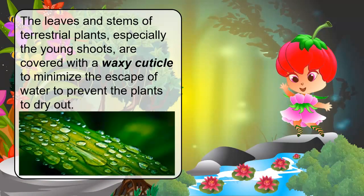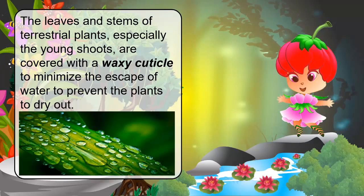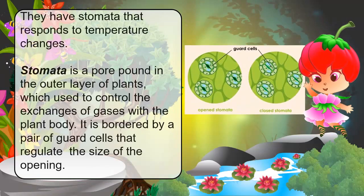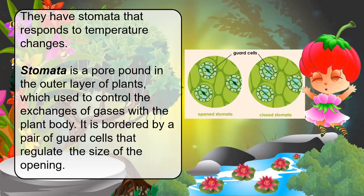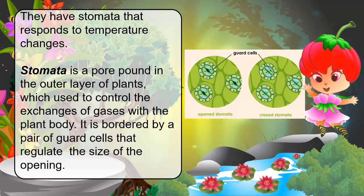These are the adaptations of terrestrial plants. The leaves and stems of terrestrial plants, especially the young shoots, are covered with a waxy cuticle to minimize the escape of water and prevent the plants from drying out. Terrestrial plants have stomata that respond to temperature changes. Stomata are pores found in the outer layer of plants, used to control the exchange of gases with the plant body. They are bordered by a pair of guard cells that regulate the size of the opening.